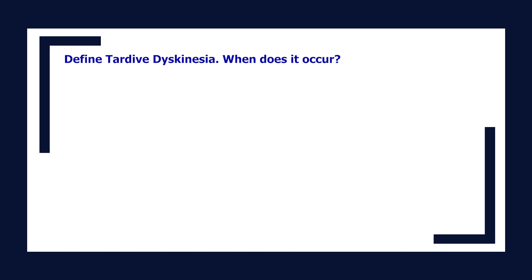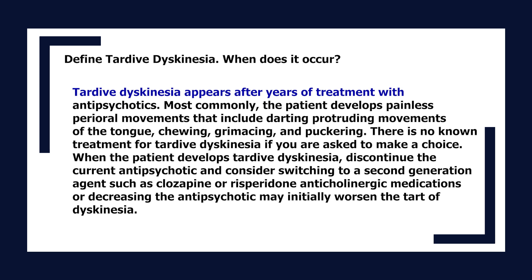Define tardive dyskinesia and when it occurs. Tardive dyskinesia appears after years of treatment with antipsychotics. Most commonly, the patient develops painless perioral movements including darting and protruding movements of the tongue, chewing, grimacing, and puckering. There is no known treatment for tardive dyskinesia. When the patient develops tardive dyskinesia, discontinue the current antipsychotic and consider switching to a second-generation agent such as clozapine or risperidone. Anticholinergic medications or decreasing the antipsychotic may initially worsen tardive dyskinesia.